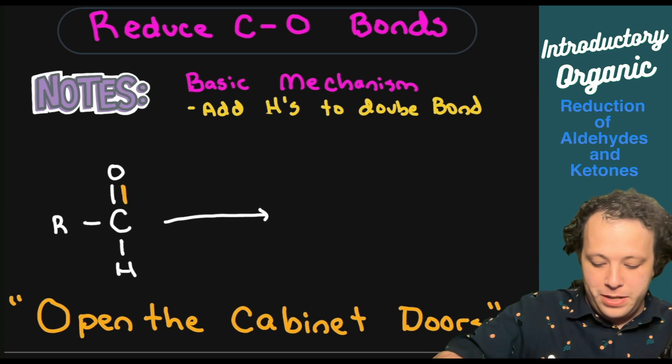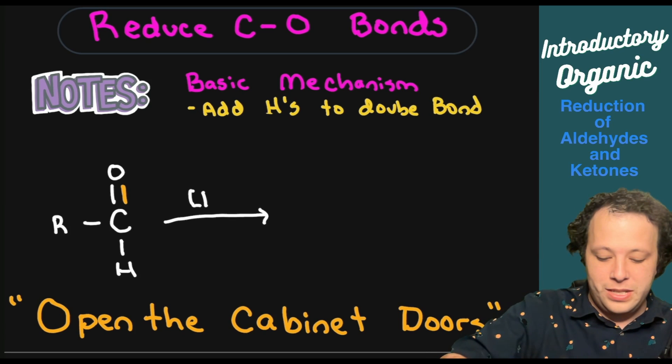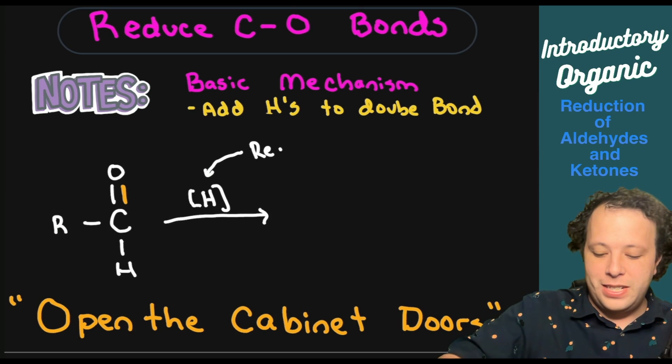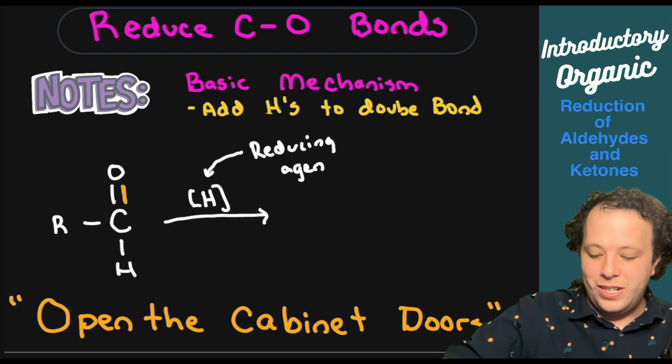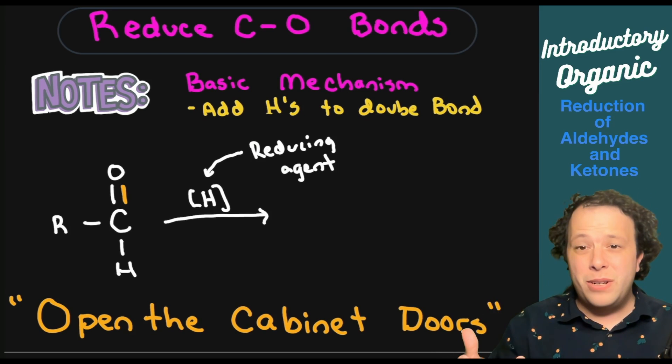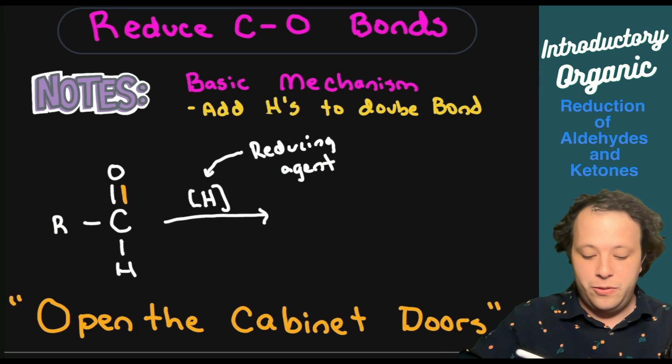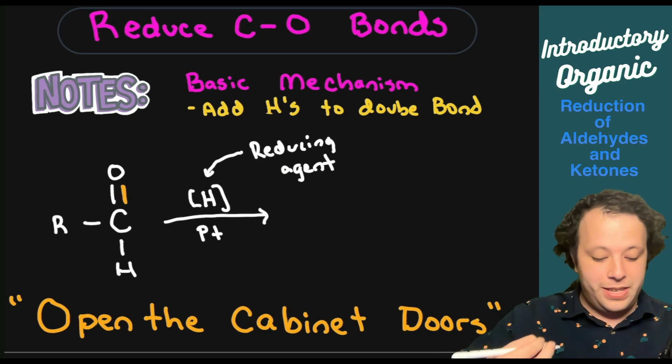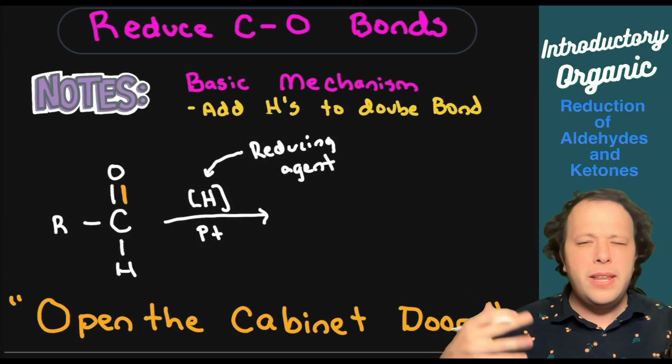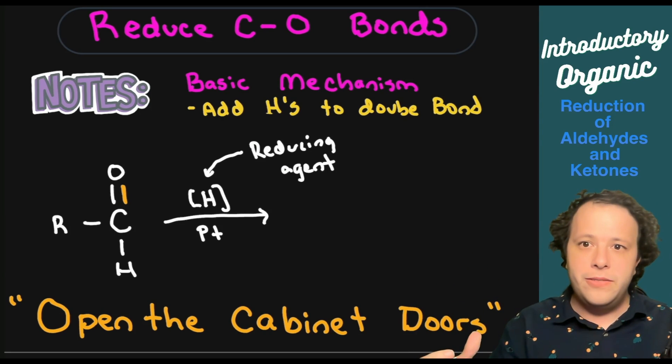When I open that up, we're going to be adding something to each part. We're going to have a reducing agent that is going to be causing this reaction. Typically it's written with an H, sometimes with an R to represent reduction. There will typically be some kind of catalyst as well.